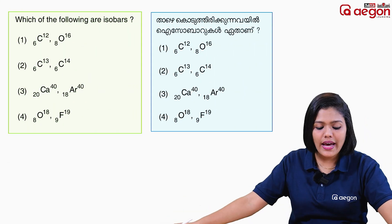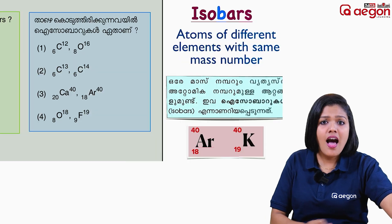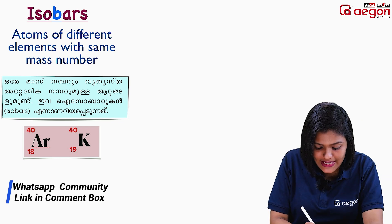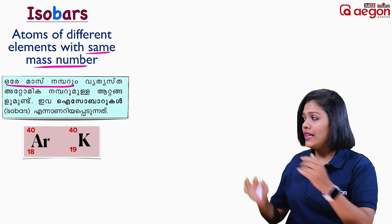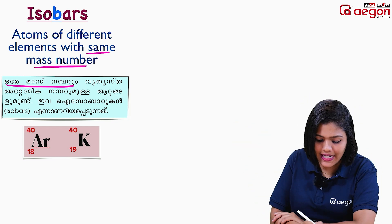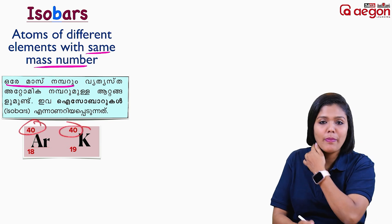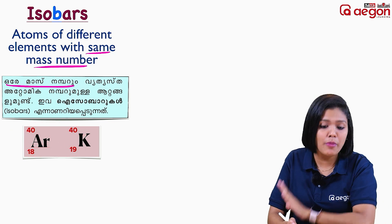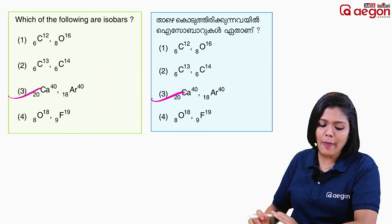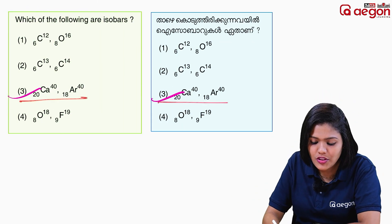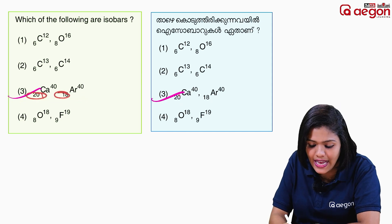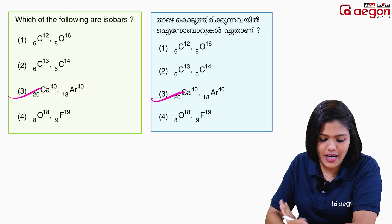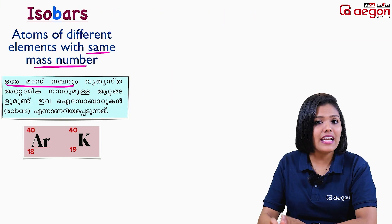Next question is about isobars. We have four options. What is an isobar? Isobars are atoms having the same mass number — not the same atomic number. Looking at the options, option 3 has the same mass number. So option 3 is the correct answer.